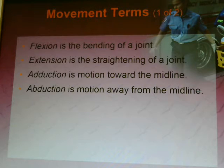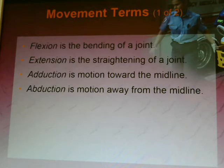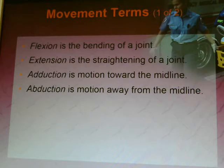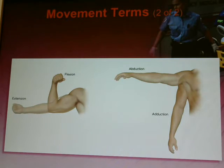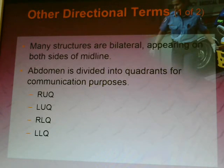Movement terms: flexion is the bending of a joint. Extension is the straightening out of a joint. Adduction is motion towards the midline. Abduction is motion away from the midline. For example, if you pick up a drink and bring it to your mouth toward your midline, that is adduction; moving it away and putting it back down is abduction.